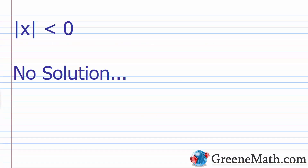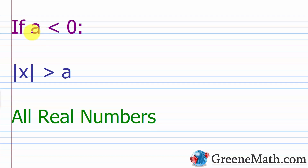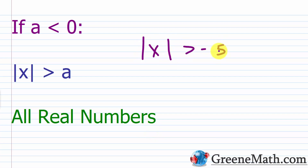Two special cases: if the absolute value of x is less than zero, there's no solution — nothing you plug in for x will give an absolute value less than zero, since the result is always zero or positive. The other case: if A is a negative number and the absolute value of x is greater than this negative real number — for example, greater than negative five — that's always true, because the absolute value is always zero or positive, which is always greater than negative five. So the solution is all real numbers.